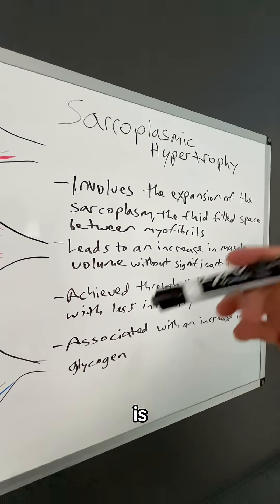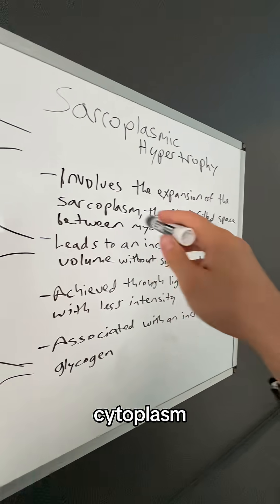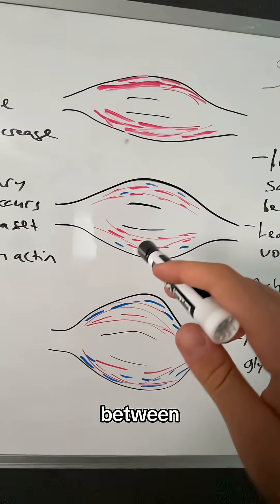Sarcoplasmic hypertrophy, on the other hand, is the expansion of sarcoplasm or the fluid inside the space in between the fibers.